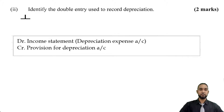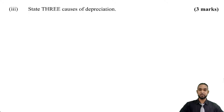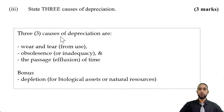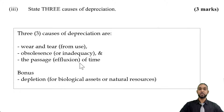The third part of part A asks us to state three causes of depreciation — they said state, not explain. Three causes are: wear and tear from use, so when you use the asset it wears out; obsolescence or inadequacy, which is when a newer model of something like a phone, computer, or printer comes out and does more than the old model, eventually making the old model inadequate or obsolete for its purpose; and the passage or effluxion of time, as things simply get older and become less able to do what they're supposed to do.